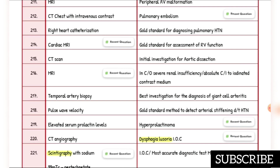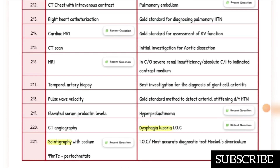In case of severe renal insufficiency, absolute contraindication to iodinated contrast medium: use MRI. Best investigation for diagnosis of giant cell arteritis is temporal artery biopsy. Gold standard method to detect arterial stiffening due to hypertension is pulse wave velocity. Investigation of choice for hyperprolactinoma is elevated serum prolactin levels. Dysphagia lusoria investigation of choice is CT angiography.